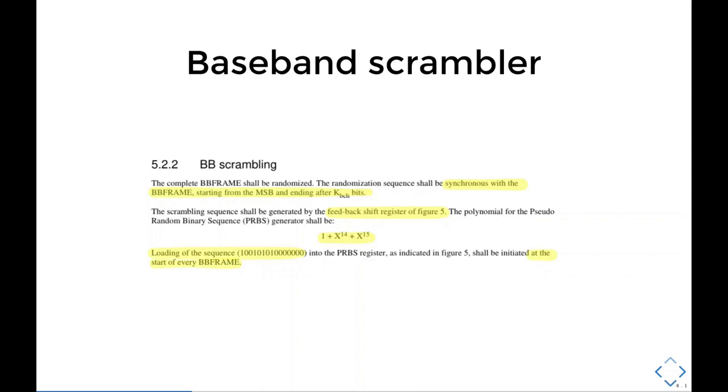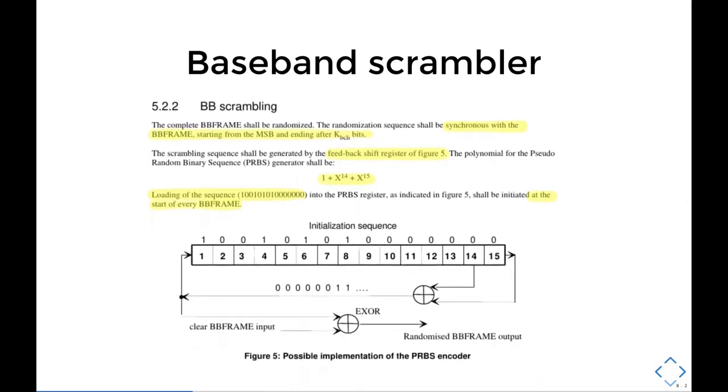The spec also provides a diagram that is actually very close to the RTL implementation. We have a 15-bit shift register, and every time we get a bit at the input, data in this shift register will move from the left to the right. We take bits 14 and 15, add them together to get the new value of bit 1. To get the output bit, we take LFSR bit 1 and XOR with the input bit, and then we're ready to get the next bit.